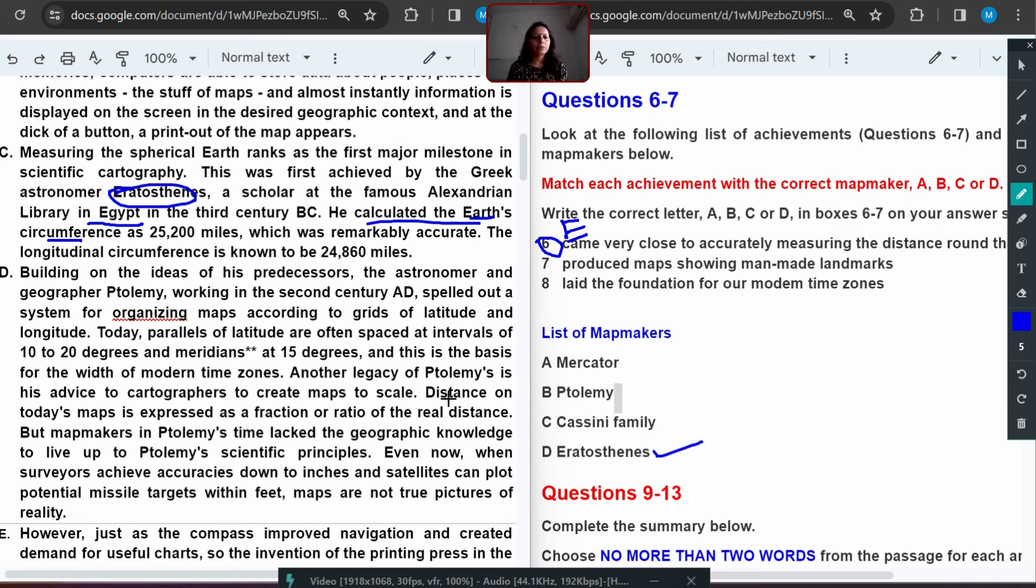Now seventh number. And let's check. Ptolemy is here. Building on the ideas of predecessors. Now we have left man-made landmarks and modern time zones. Working in the second century spelled out a system for organizing maps according to grids of latitude and longitude. Today, parallels of latitude are often spaced at intervals of 15 degrees, and this is the basis for width of time zones. Exact word is there. So where they are matching, this is relating to this word. So we will just select this word with eighth number. So B is the eighth number.